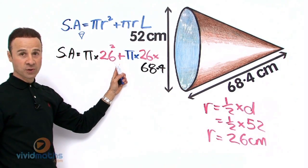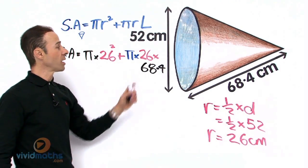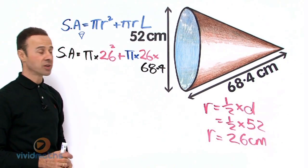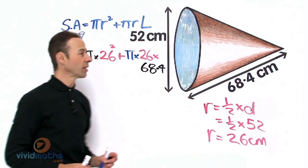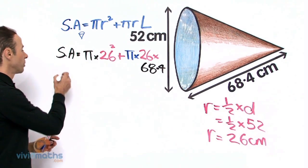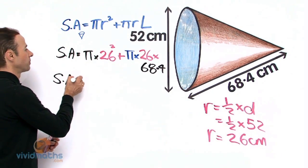Plus, this is the curved surface of the cone, π times r, which is 26 in this case, times 68.4, this length as I mentioned earlier. So let's plug all that into the formula, into the calculator.